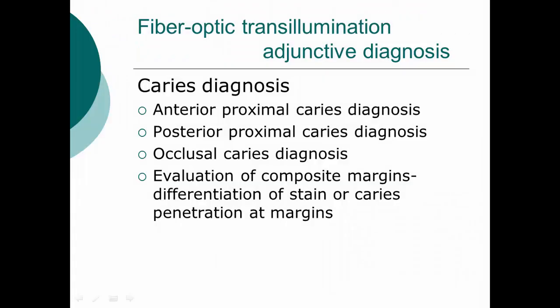So how do we use fiber optic transillumination for adjunctive diagnosis? Primarily for caries diagnosis, for anterior and posterior proximal caries lesions. We can also use it to evaluate occlusal caries lesions, as well as to evaluate existing composite margins to differentiate between stain or caries that's penetrating at those margins.